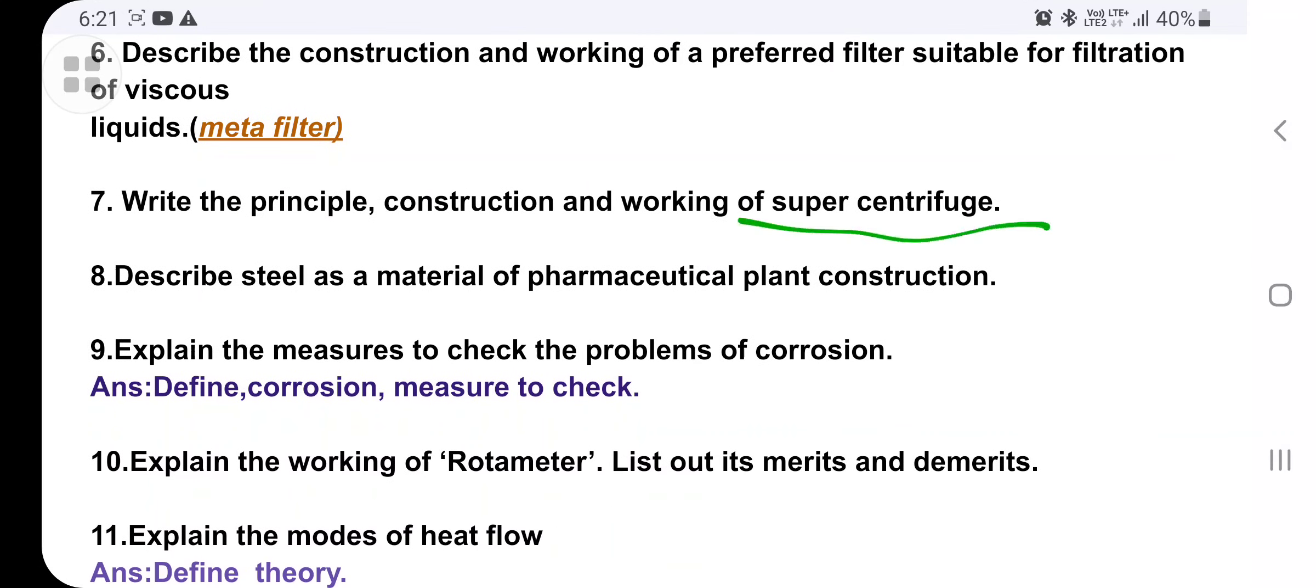Material of pharmaceutical plant construction means steel as a material. Why you use the steel, that you have to write. Why use the plastic, that also you have to write. Then measures to check the problems of corrosion - define corrosion, measures to check, types also you can write.